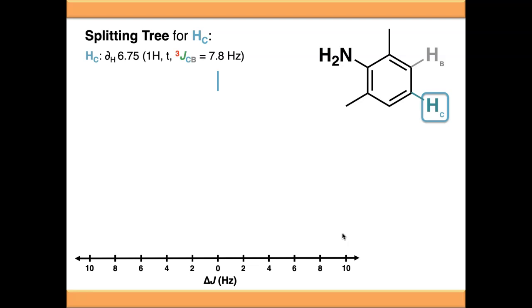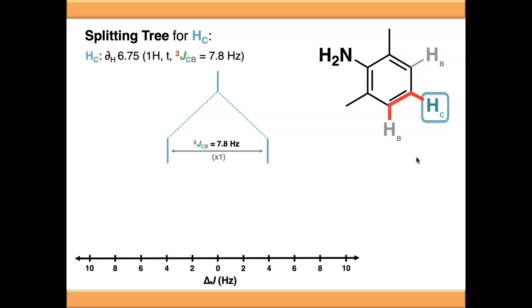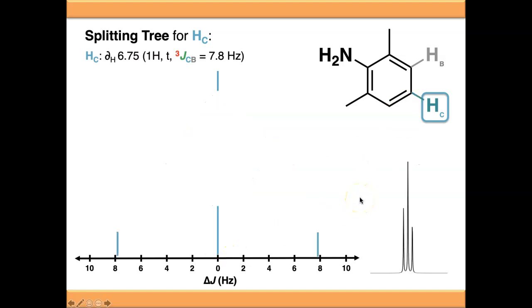One scenario that splitting trees help clarify is where signals should theoretically be something but look like something else - where signals coalesce or overlap. Taking a simple example: HC at the para position of a phenyl ring coupling to HB. This is actually a simple multiplet with one J value. HC gives you a triplet because you've got an HB on both sides. Splitting against the first HB gives a 7.8 Hz splitting, and splitting against the second HB again gives 7.8 Hz - they meet in the middle to give a signal twice as intense. The overall signal is a 1:2:1 triplet - a simple multiplet. Splitting trees work exactly the same for simple multiplets.